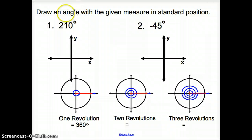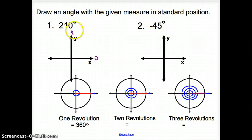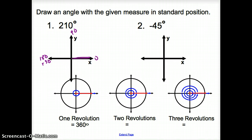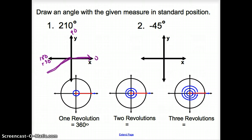Now we are asked to draw an angle with the given measure in standard position. 210 degrees — where is that? Here is 0, we go up to 90 and then to 180. So 210 is 30 degrees past 180. So I'm going to have my initial side with the ray on the positive x-axis, and then I'm going to go 30 degrees past here and draw the terminal side. So my angle is 210 degrees.